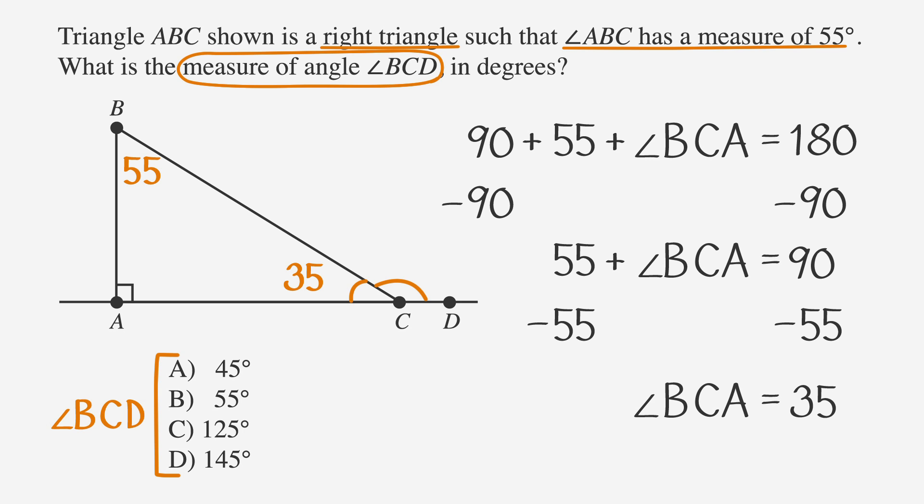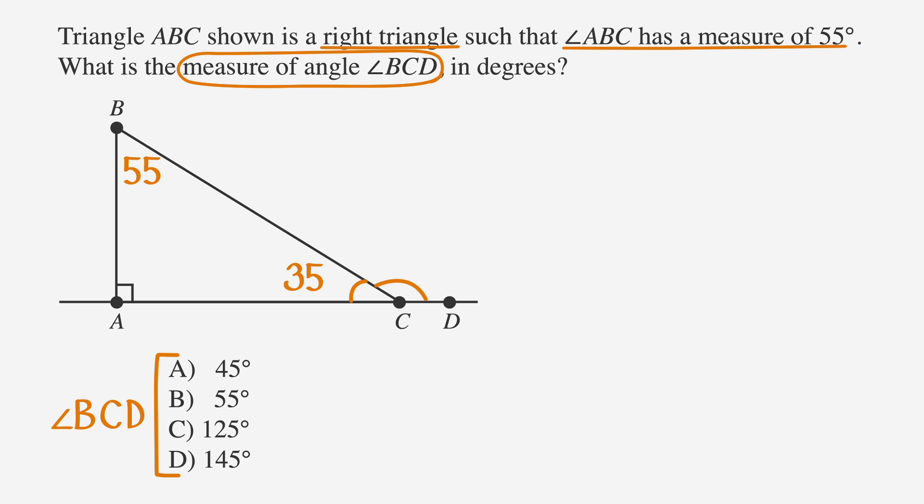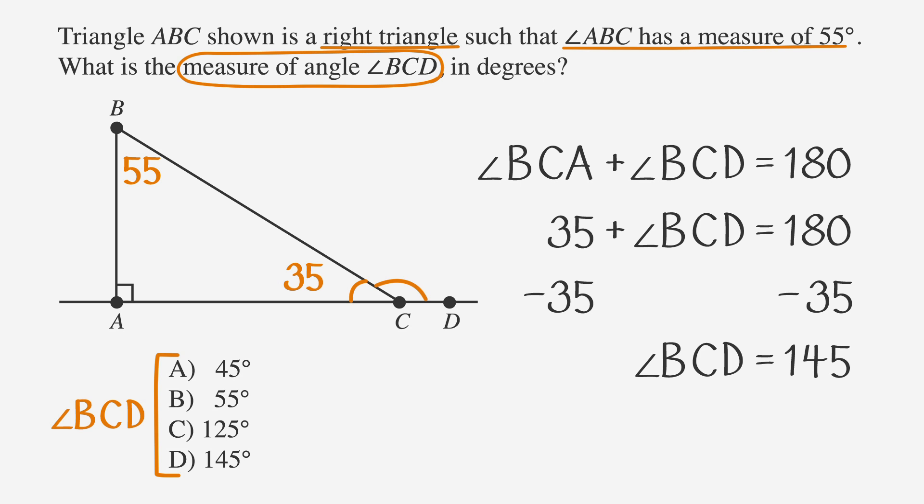But we're not done yet. We're not looking to solve for angle BCA. We're looking to solve for angle BCD. But we're on the right path because we know that angles BCA and BCD form a line. So angle BCA plus angle BCD equals 180. We know BCA is 35, so we get 35 plus BCD equals 180. A bit of subtraction and we're home. Angle BCD equals 145, which is answer choice D. And we're done.